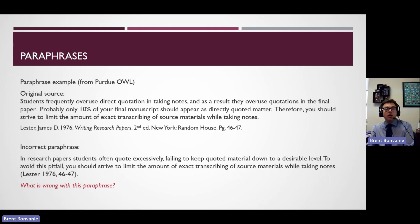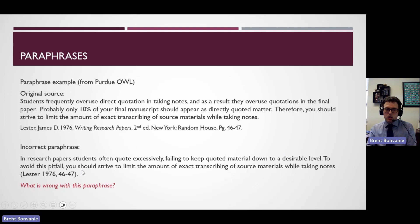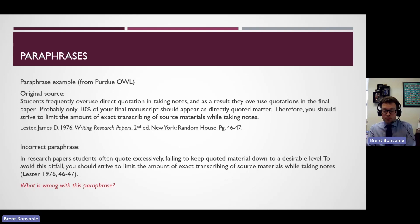Here's a second example of a paraphrase done wrong — this one's a bit of a trick because the problem is at the end. The last sentence of the paraphrase is exactly the same as the original source: 'you should strive to limit the amount of exact transcribing of source materials while taking notes.' The back half of this paraphrase is word-for-word identical to the original. This would be plagiarism because you're now quoting without quotation marks. If there's a chunk of your sentence that is word-for-word the same, either quote it properly or change it so it sounds very different.